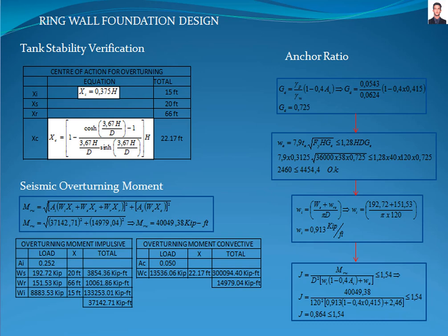The next step is to calculate the effective specific gravity Ge with this equation, giving a result of 0.725. Now we calculate the force resistance Fha with equation E6.2.1.1N-1B, where FY is the yield strength of the plate and Ta is the thickness of the first plate of the annulus, giving a result of 2.46 kips per foot.